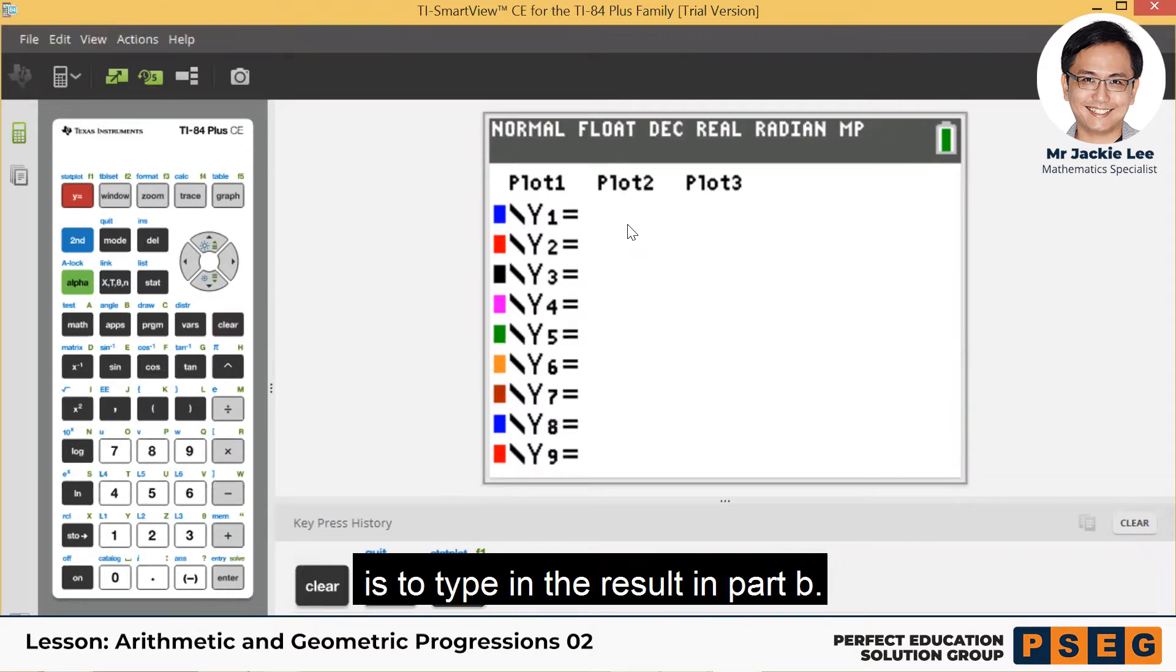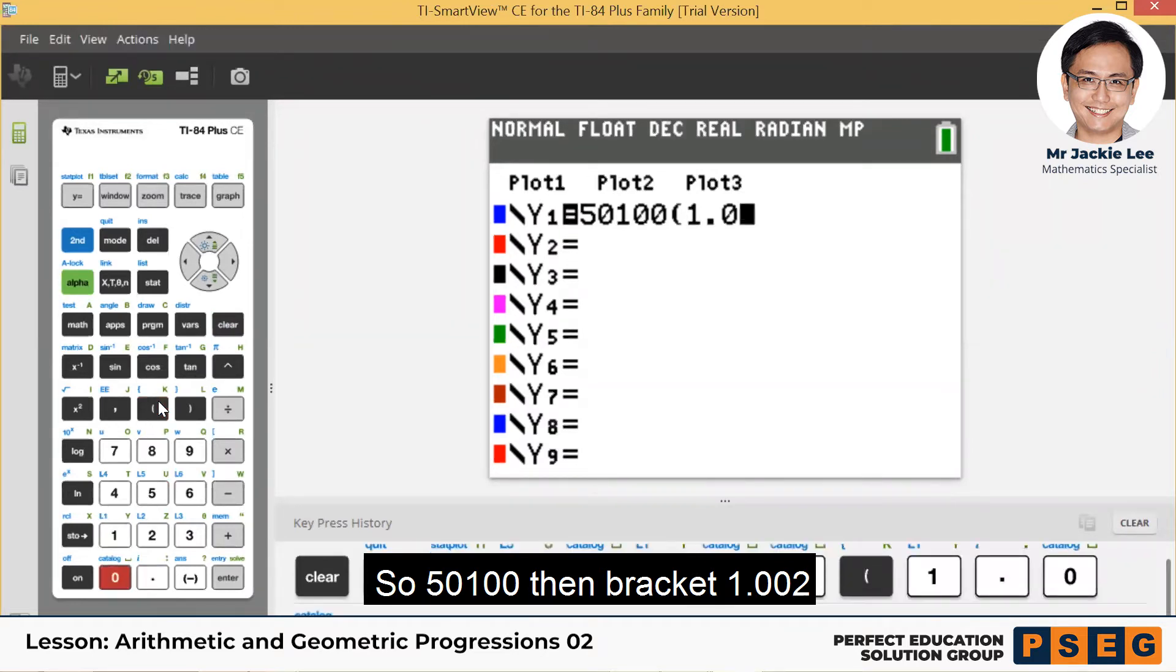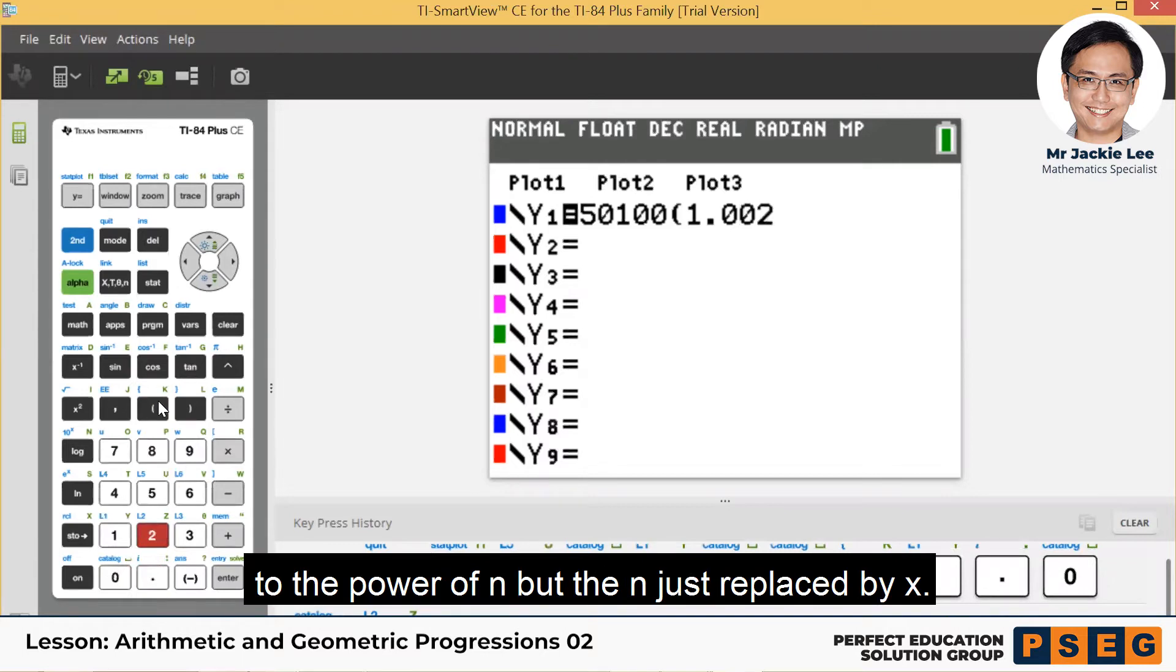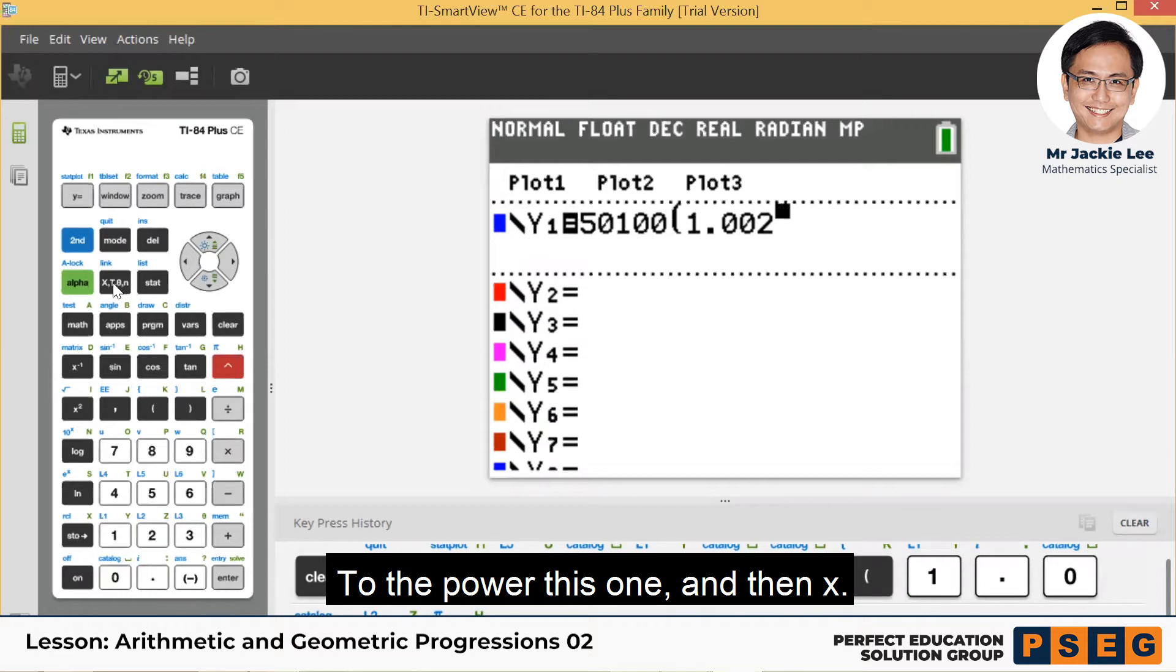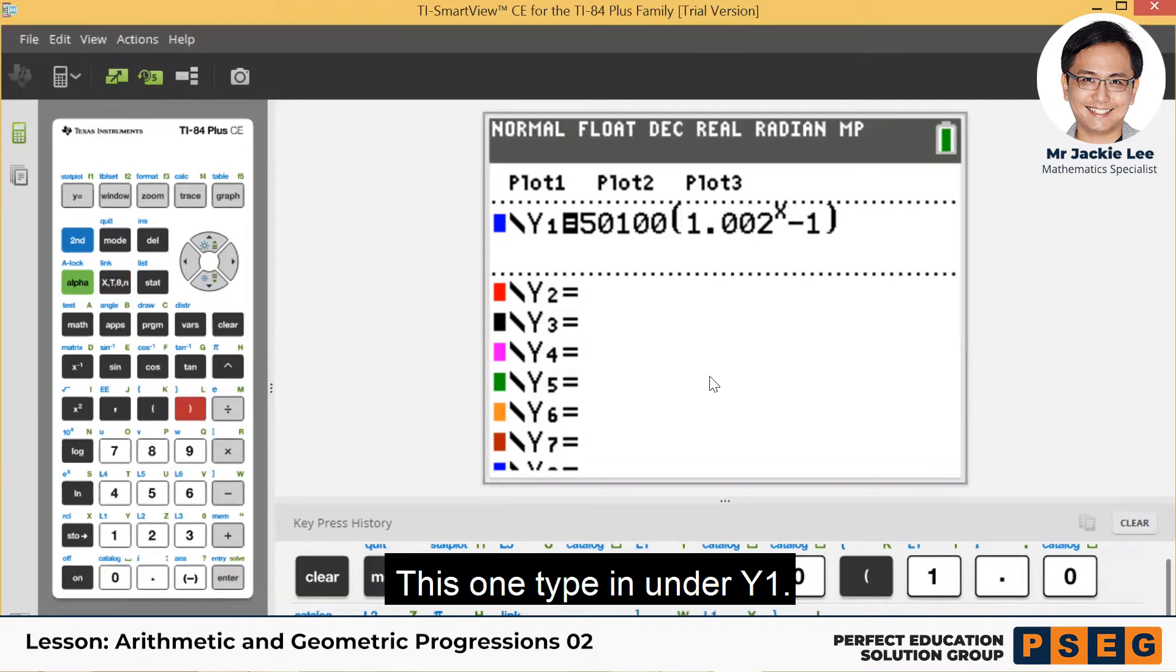First thing I want you to do now is to type in the result from part B. So 50100, then bracket, 1.002 to the power x. To the power n, the n is just replaced by x. Then move up and then minus 1, then close bracket. This one type in under Y1.